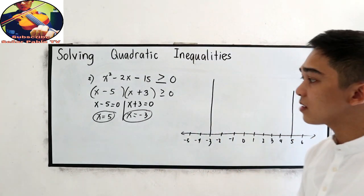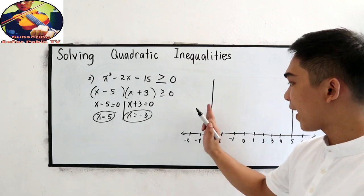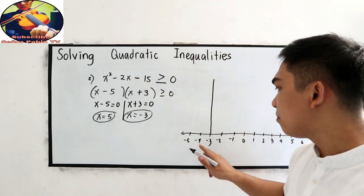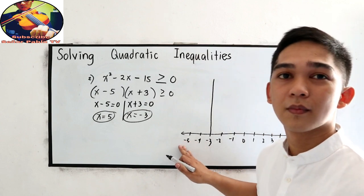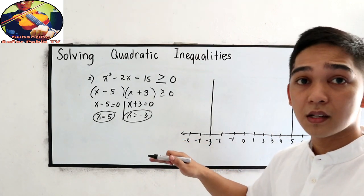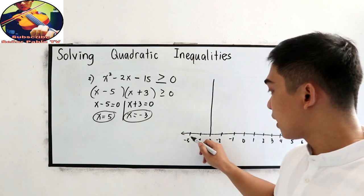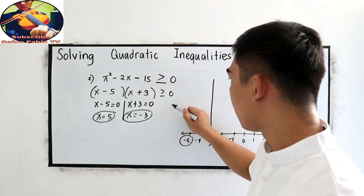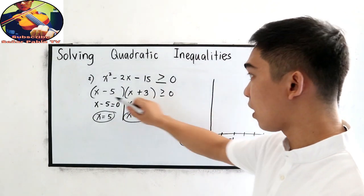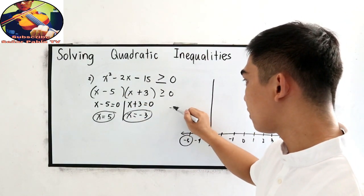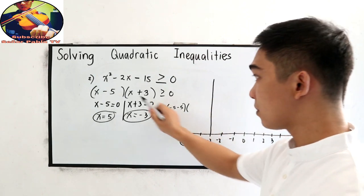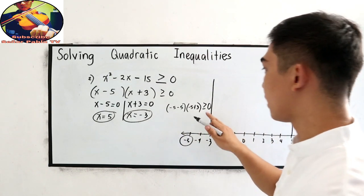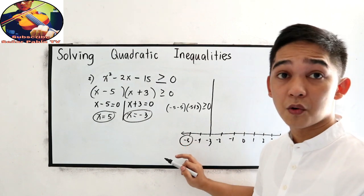And let us check whether the left side of negative 3 satisfies our inequality or not. So pick a number on the left side of negative 3. Negative 4, negative 5, negative 6, negative 7, it's up to you. So let us choose negative 5. Copy the factors. X minus 5. So my x is negative 5 minus 5 times x is negative 5 plus 3, greater than or equal to 0. Let us check if this negative 5 satisfies our inequality.